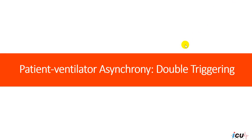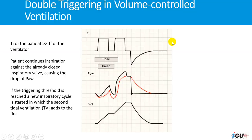Double triggering is encountered a lot in patients on mechanical ventilation, and it is very important that the intensivist is able to recognize this patient-ventilator asynchrony. In order to understand double triggering, you need to understand the relationship between the inspiratory time on the ventilator and the patient's inspiratory effort.